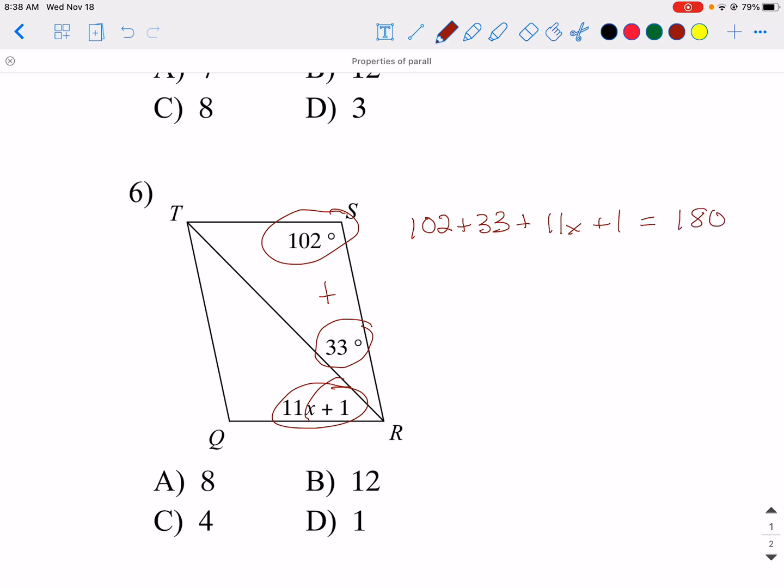So then you start combining like terms. So this is 135 plus 1, 136 plus 11x equals 180. And we're going to subtract 136.